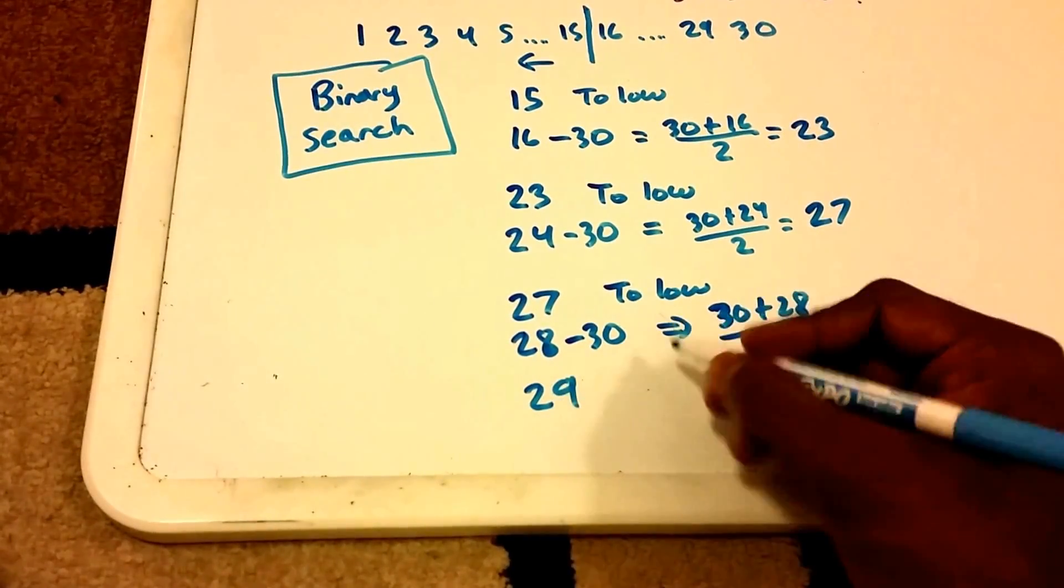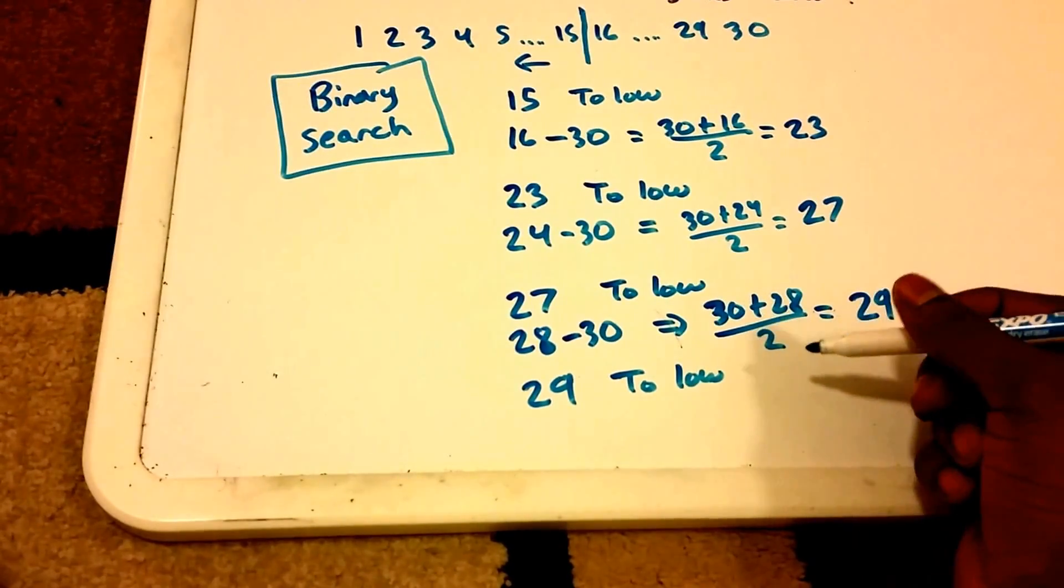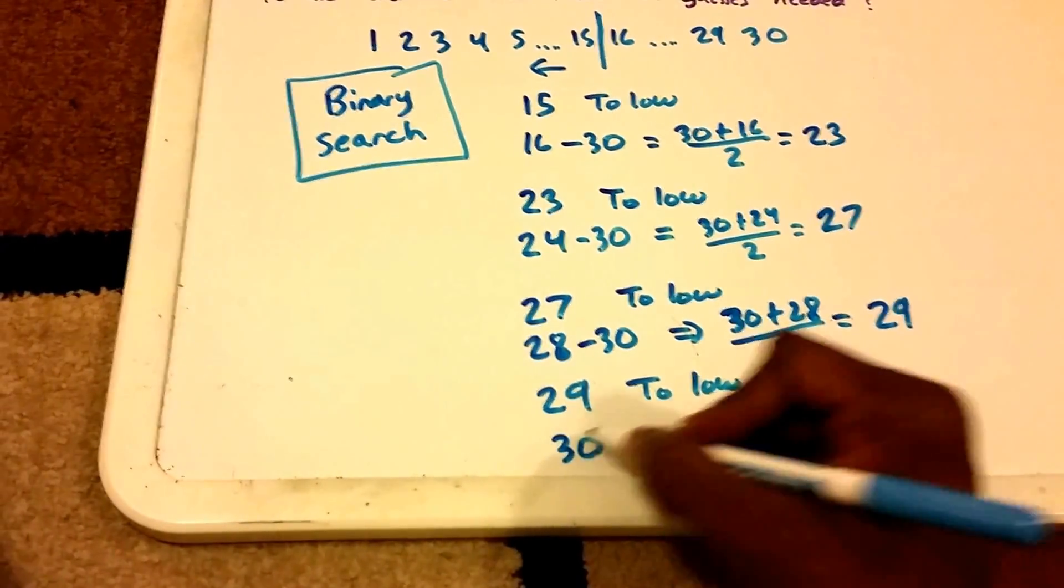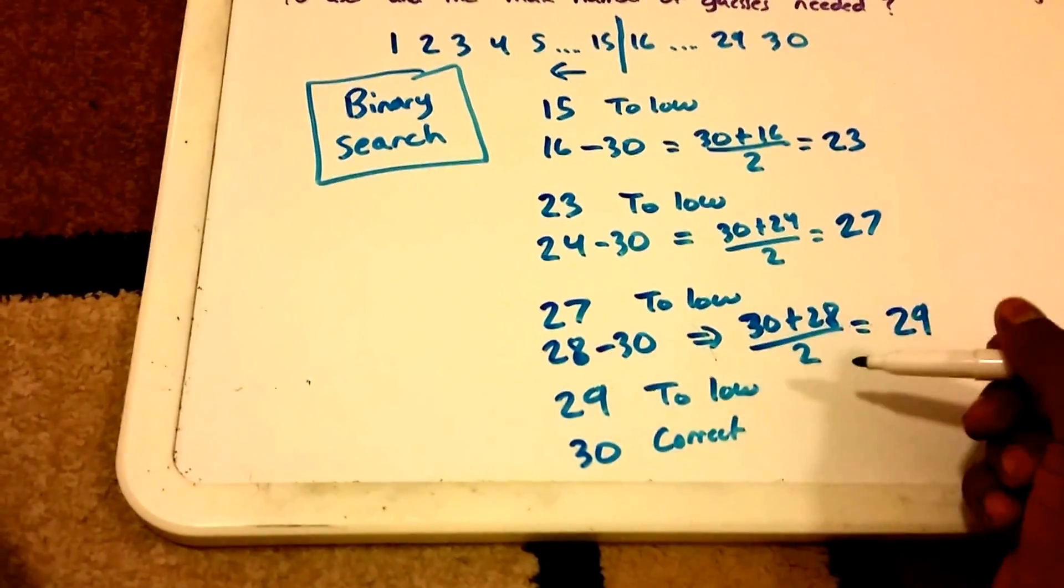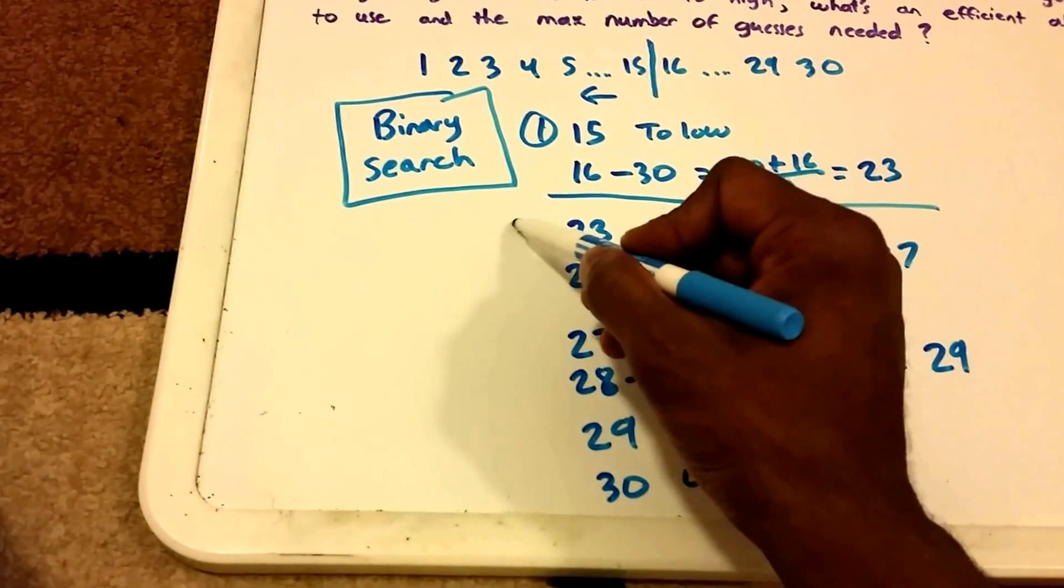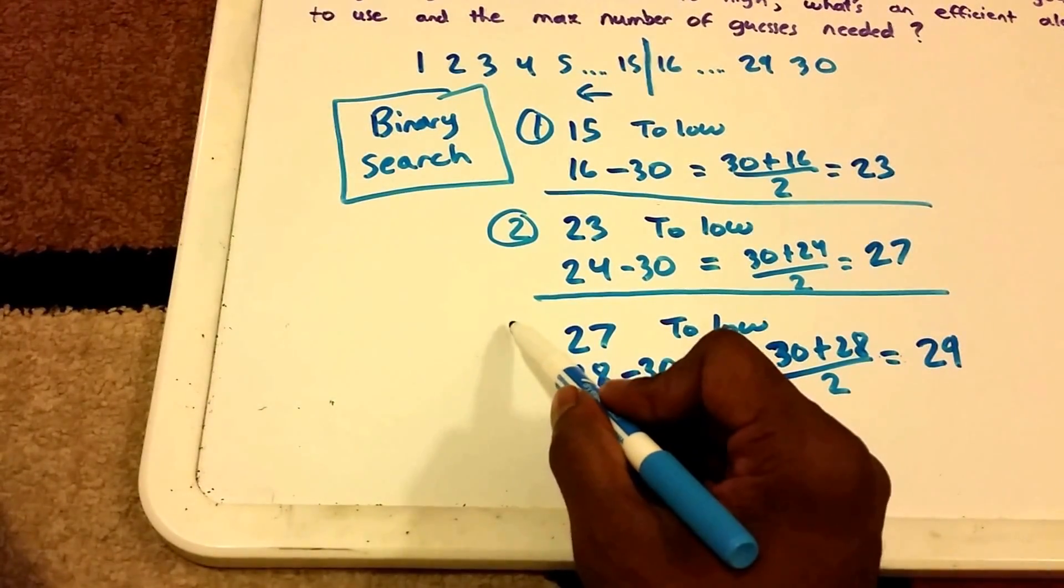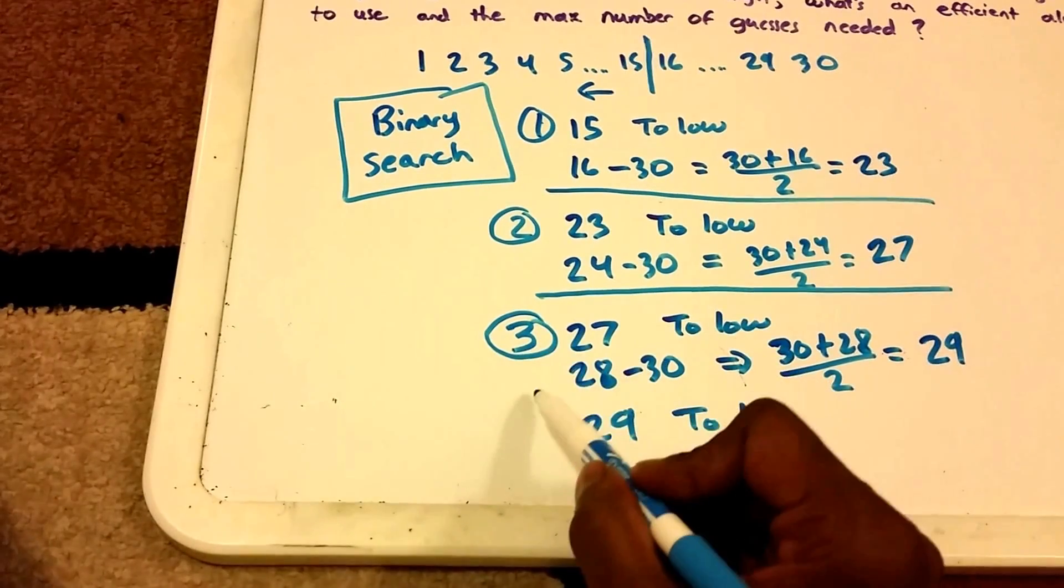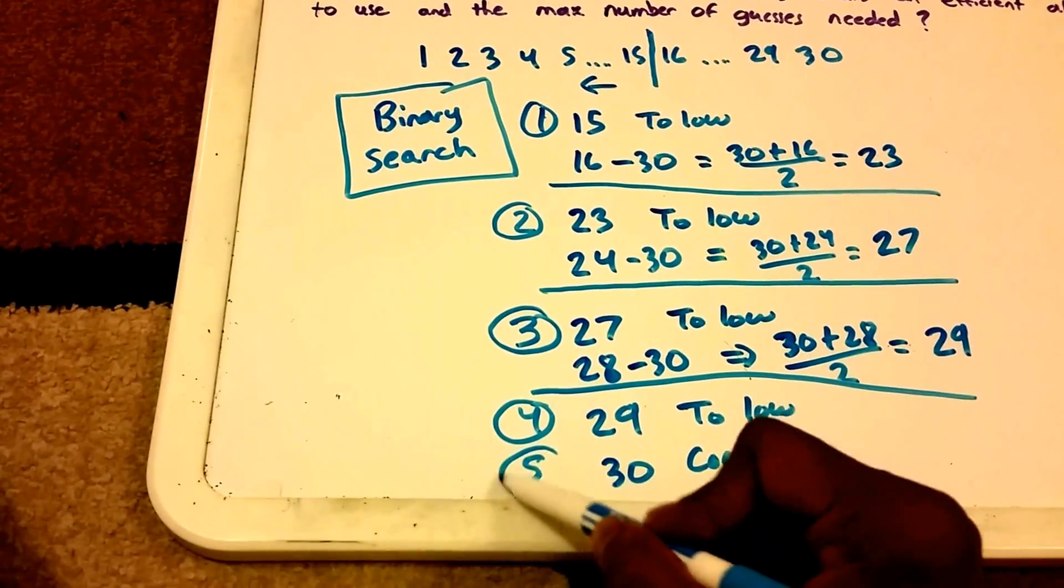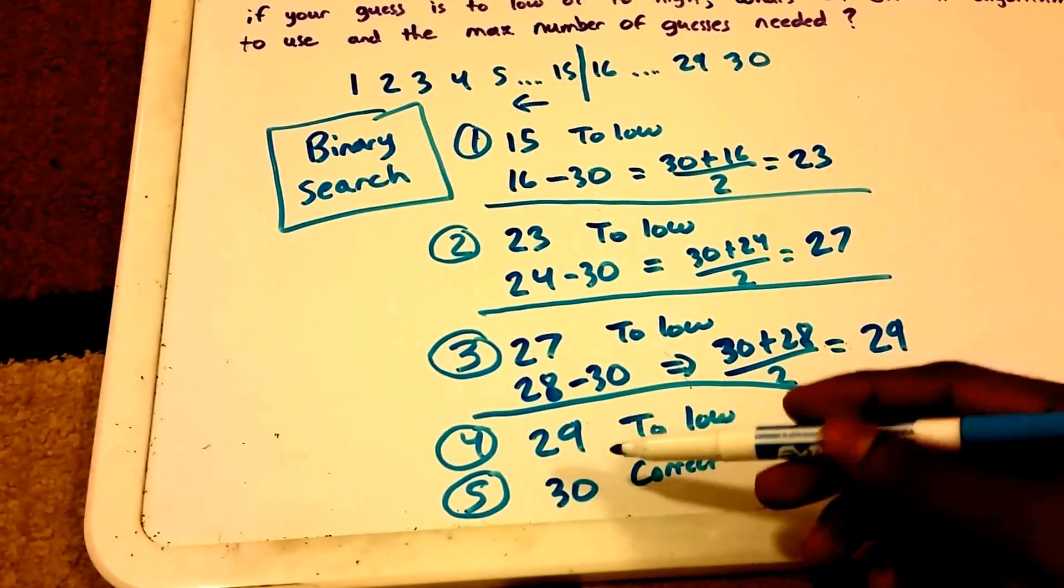So we'll guess 29. And we'll say, hey, is 29 your number? It says, no, that's still too low. It's going to tell us to guess again. And all we have is 30 left. So we're going to say your number is 30. And then it's going to say, correct. So how many guesses did it take? Let's see. 1 here, 2 here, then 3 here, and then 4 here, and then 5 here. So it only took 5 guesses.